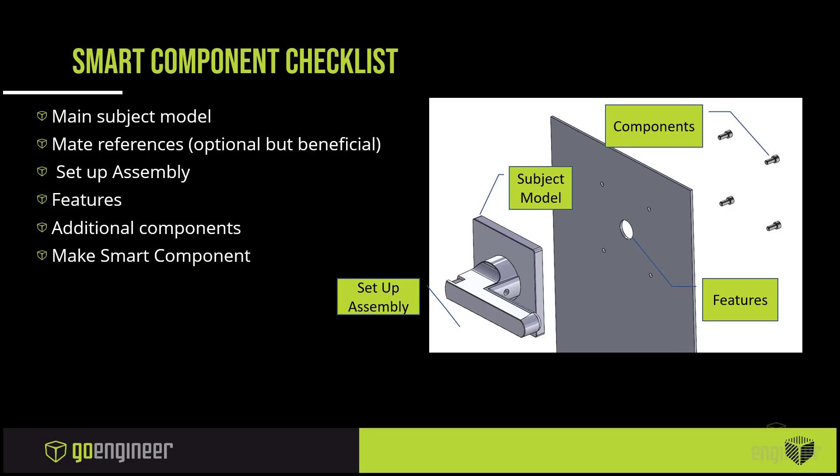To create a smart component, you'll need a couple of things. You'll need a main subject model — this could be a model that you create in SOLIDWORKS or a downloaded model. Mate references are optional but beneficial; they help in facilitating the assembly process. You'll need a setup assembly that will allow you to create features, add additional components such as hardware, and then finally we will use the make smart component command.